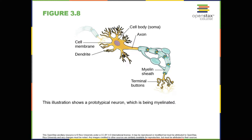Axons range in length from a fraction of an inch to several feet. In some axons, glial cells form a fatty substance known as the myelin sheath, which coats the axon and acts as an insulator, increasing the speed at which the signal travels. The myelin sheath is crucial for the normal operation of the neurons within the nervous system, and the loss of insulation it provides can be detrimental to normal function.